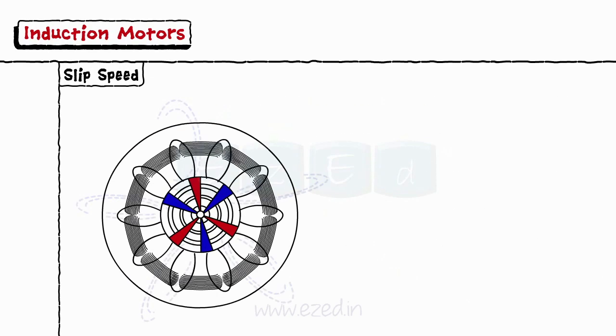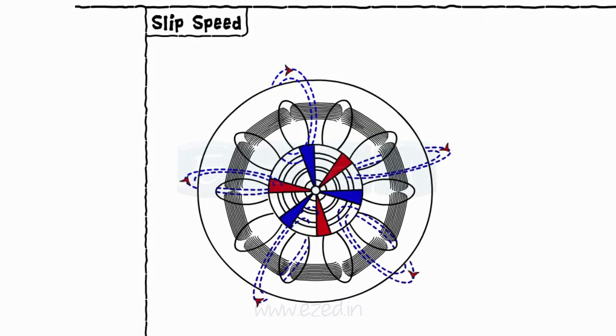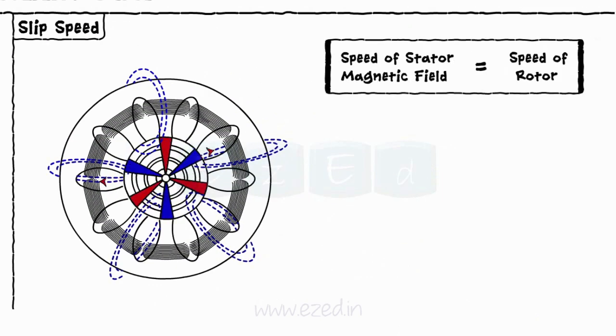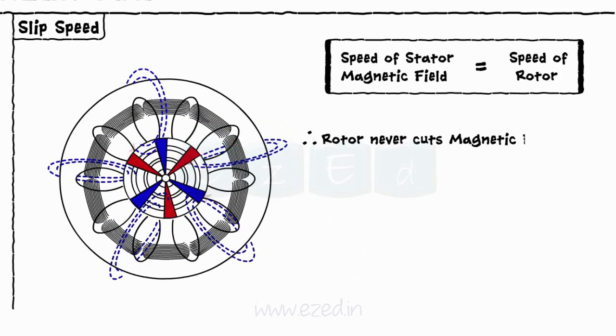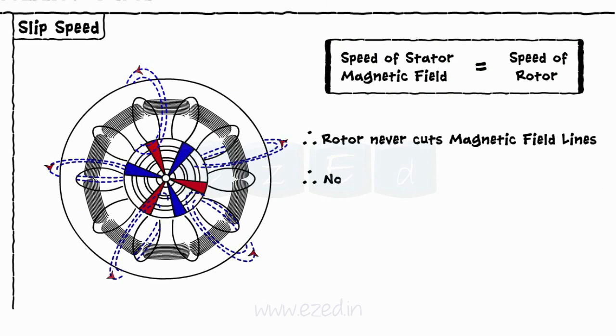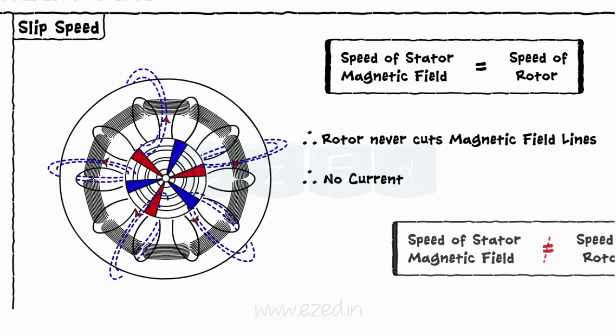If the rotor and the magnetic field of the stator rotate with the same or synchronous speed, rotor bars will never cut the magnetic field lines and there will be no current induced in the rotor. Hence, the rotor and the magnetic field of the stator never rotate with the same speed.